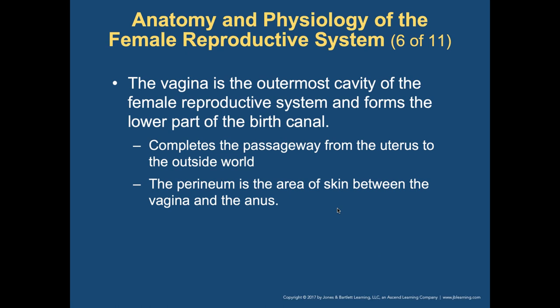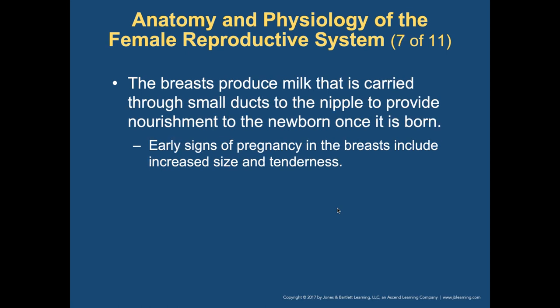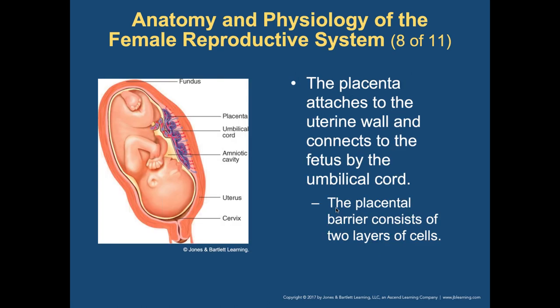The vagina completes the passageway from the uterus to the outside world for the newborn. The breasts produce milk — the mammary glands carry milk through small ducts to the nipple to provide nourishment to the newborn. The placenta is connected to the fetus by the umbilical cord, providing all the nutrients. The placenta barrier consists of two layers of cells that keep the mother's and fetus's circulations separated while allowing substances to pass back and forth between them.